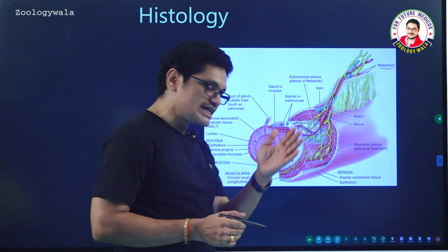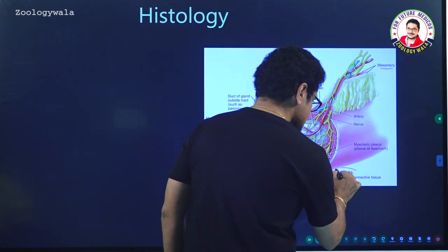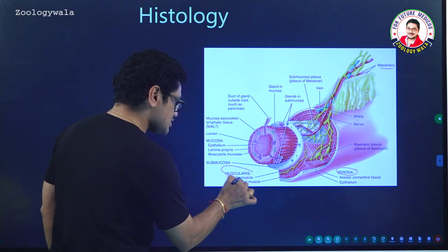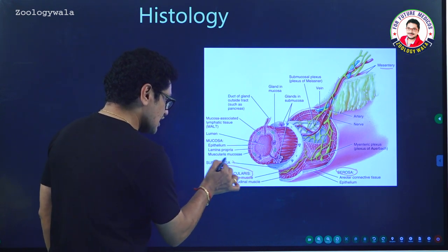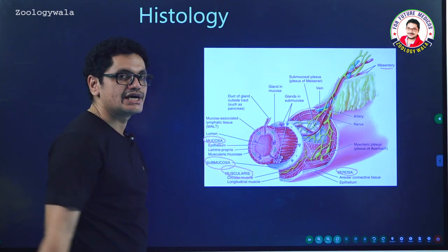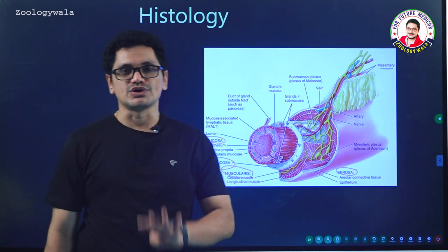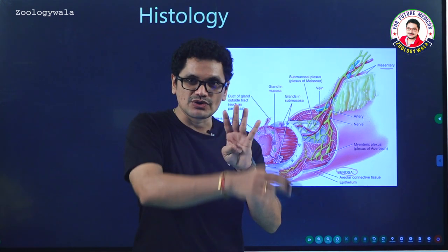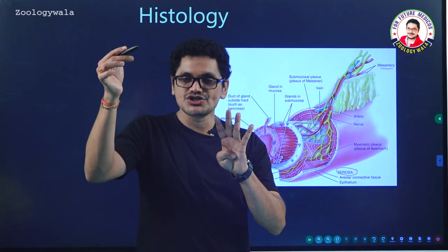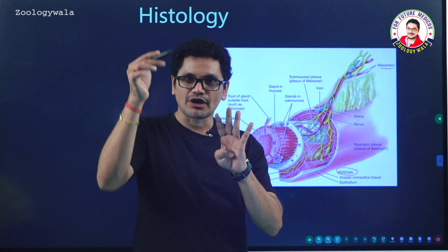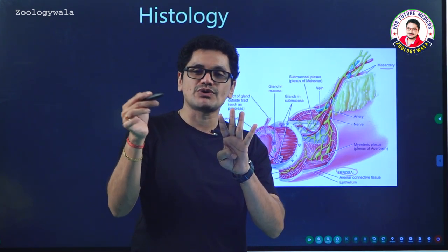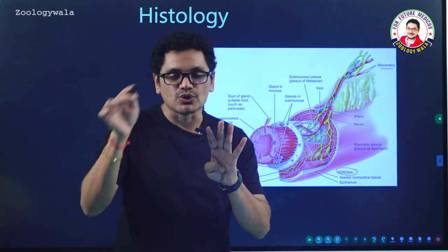The outermost layer is the serosa, followed by the second layer muscularis, and the third one is submucosa, and the deepermost layer is mucosa. Four layers are present: serosa is the outermost layer, below which muscularis is present, below which the third layer submucosa, and the innermost one is mucosa.